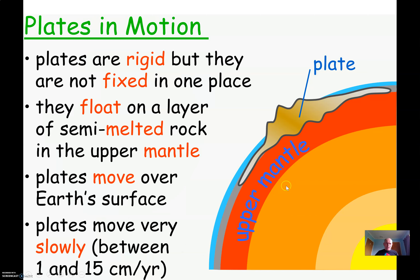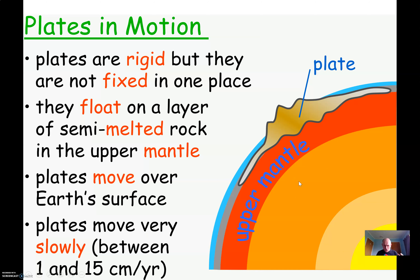The plates underneath us are rigid, but they're not fixed in place — they move around a little bit. They float on the layer of rock in here, which is almost but not quite melted. It moves and flows at about the speed your fingernails grow at — around about somewhere between 10 and 150 millimeters per year. They move because of the big, slowly churning currents underneath.